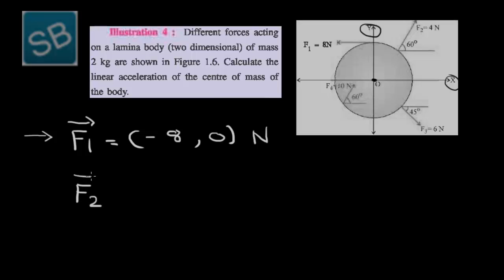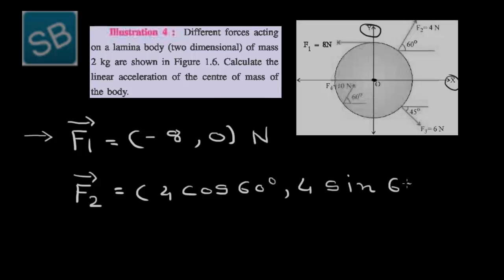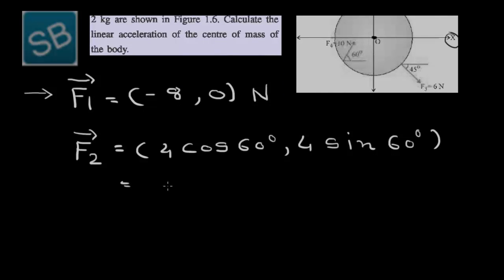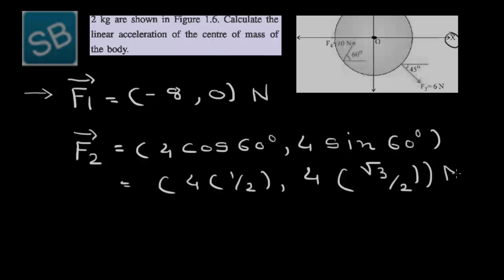Force F2 is given as 4 N at an angle of 60 degrees in the XY plane. The magnitude is 4, so we write the X component as 4 cos 60° and the Y component as 4 sin 60°. Therefore, F2 = 4 × (1/2) for the X component and 4 × (√3/2) for the Y component, which simplifies to (2, 2√3) Newton.